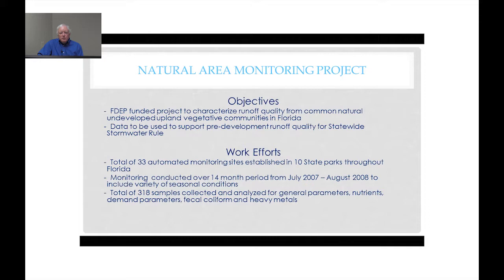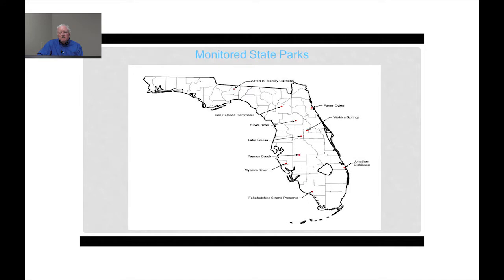We installed a total of 33 automated monitoring sites in 10 state parks, because state parks would provide the best opportunity to monitor lands not impacted by development activities. Over the 14-month period, we collected a total of 318 samples at the 33 automated monitoring sites. These sites were located throughout the state of Florida, from the panhandle all the way down to extreme southern portions, and each park contained different unique land use characteristics.